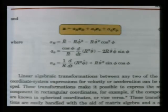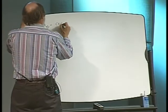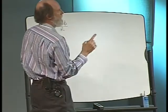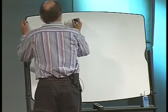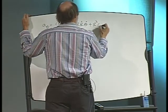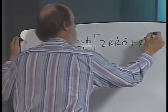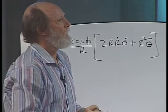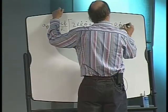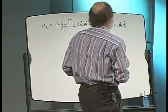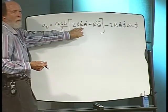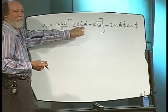Let's look at the a_theta term and expand it. We have cosine of phi over capital R, and then we want to take the time derivative of R squared theta dot. The time derivative of R squared theta dot is two R R dot theta dot plus R squared theta double dot. And then we have to subtract that last term: minus two R theta dot phi dot sine of phi. You have to use your chain rule on the R squared theta dot expression.